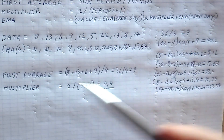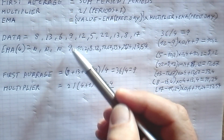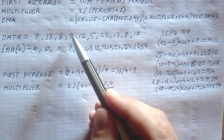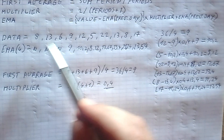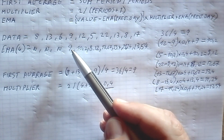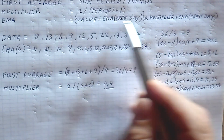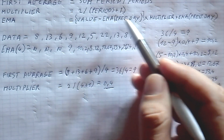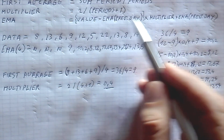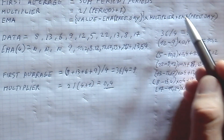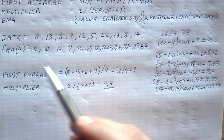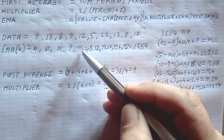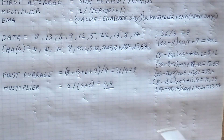So all the values are worked out and the EMA is pretty simple. To recap: the first EMA value is just a simple moving average (SMA) — the average of the first 4 numbers, which is 9. Then we use the formula: (current value - previous EMA) × multiplier + previous EMA, giving us 10.2 and so on.